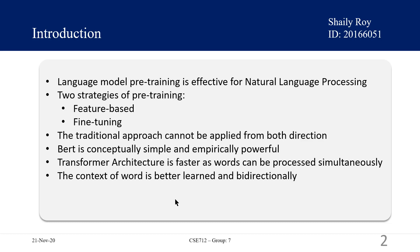There are two existing strategies for applying pre-trained language representation: feature-based and fine-tuning. The feature-based approach uses task-specific architecture that includes the pre-trained representation as original features. The fine-tuning approach, such as the Generative Pre-trained Transformer, introduces minimal task-specific parameters and is trained on the downstream task by simply fine-tuning all pre-trained parameters. The two approaches share the same objective function during pre-training, where they use unidirectional language models to learn general language representations. In this paper, they improve the fine-tuning-based approach by proposing BERT.